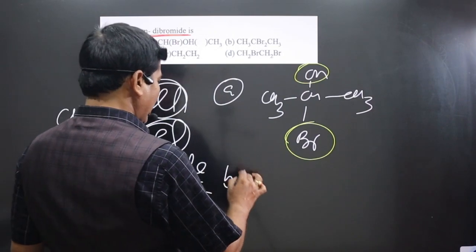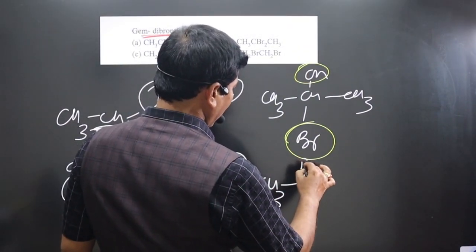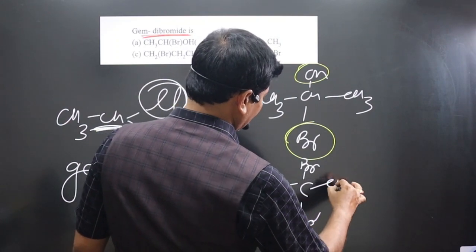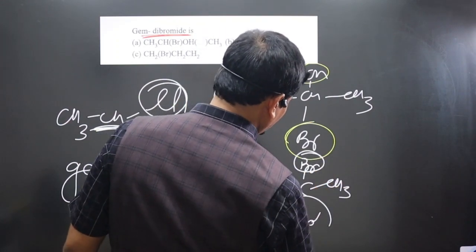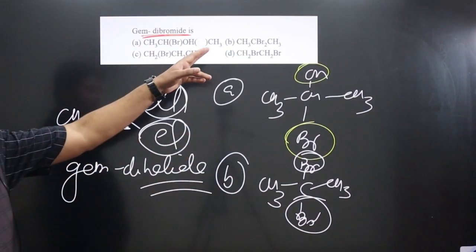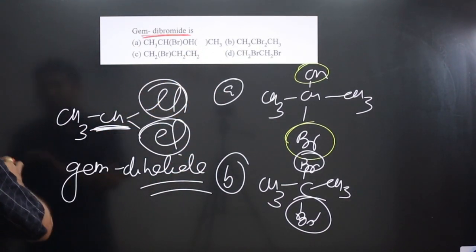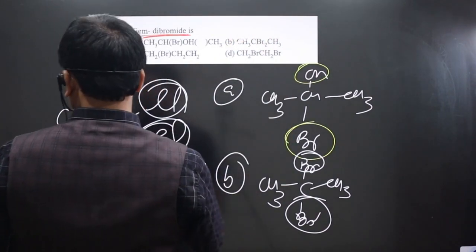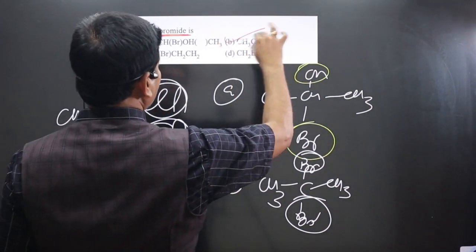If I go to the second option, you can see we have CH3, C, and then Br is attached here and also Br is attached, then we get CH3. You can see to the same carbon, two halogens are attached. Hence we can say option B is an example of gem dihalide.